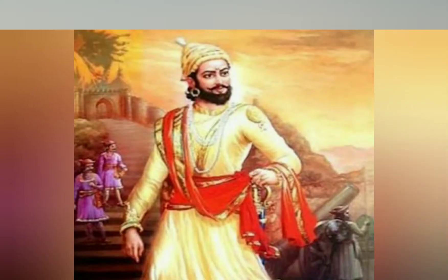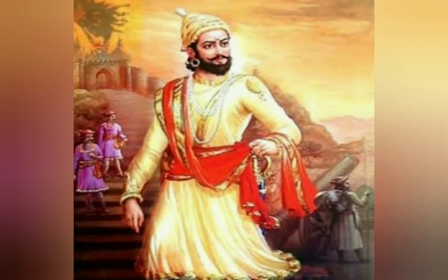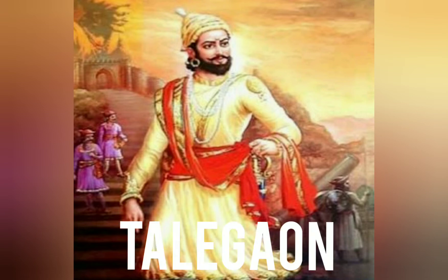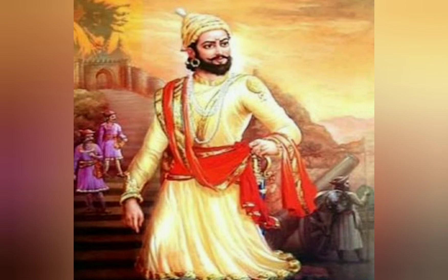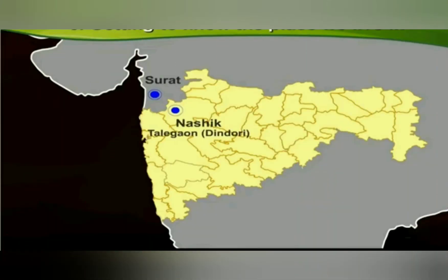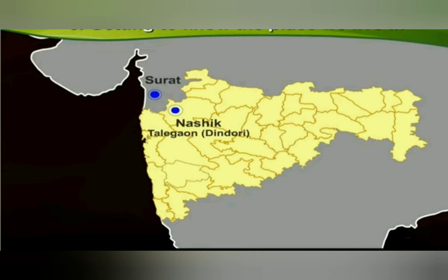While returning from Surat, Chhatrapati Shivaji Maharaj stopped near Talegau. This Talegau is in Dindori in Nasik district. He had set up his army camp, or Tal, there, giving the place the name Talegau. So why did that place get the name Talegau? Because Shivaji Maharaj set up his army camp — in Marathi language we call it a Tal — and because of that Tal, the place got the name Talegau.